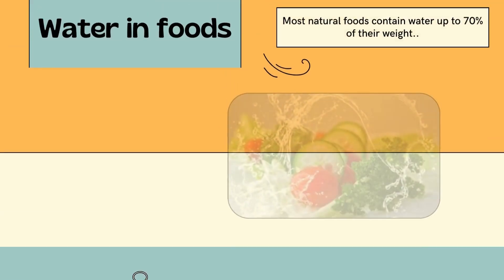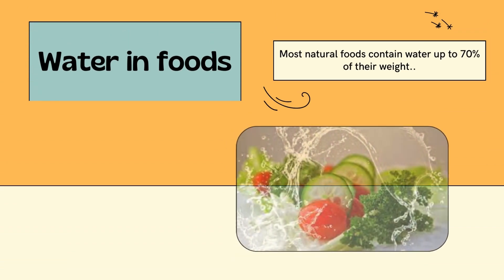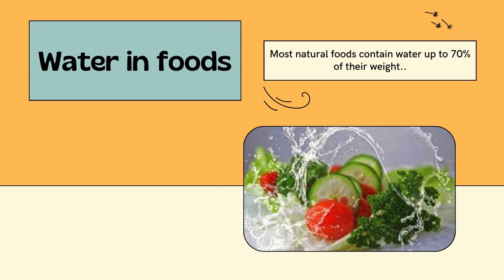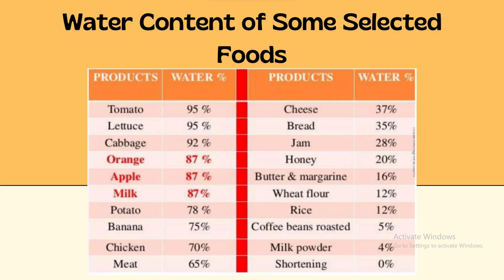Water in foods: most natural foods contain water up to 70% of their weight. As you can see here, the chart shows some selected foods and each food's water content.